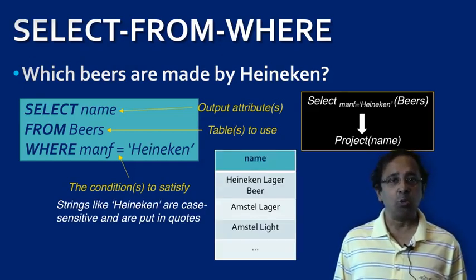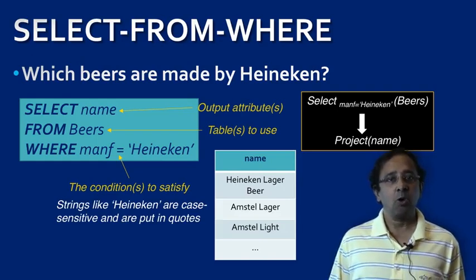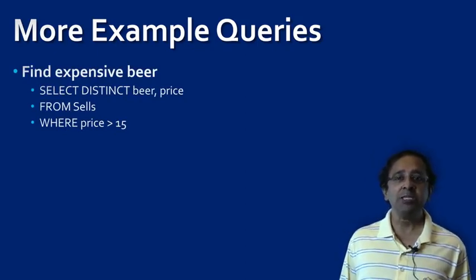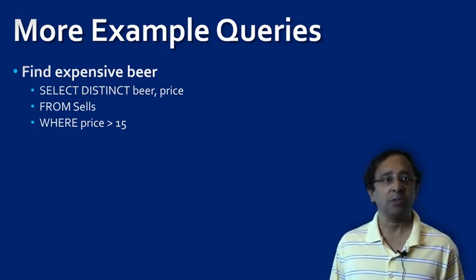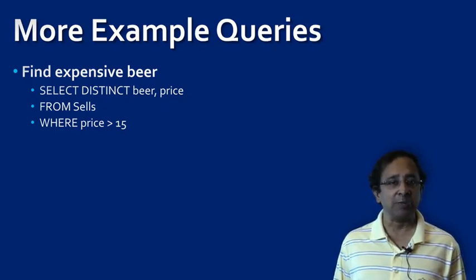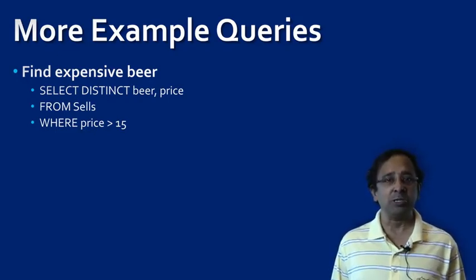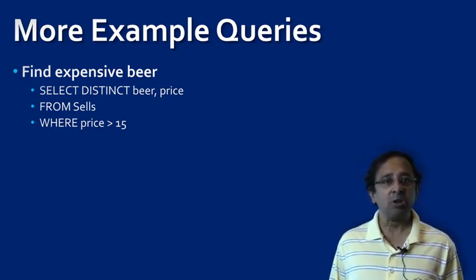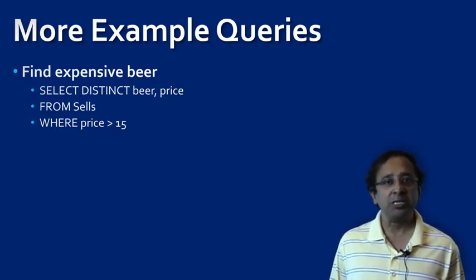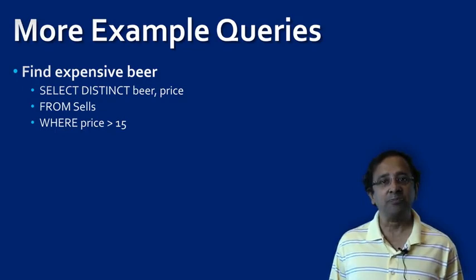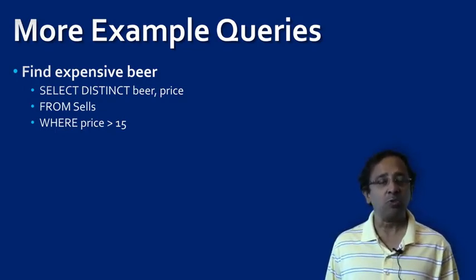We illustrate some more features of SQL using two example queries. The first looks for expensive beer and its price. Let's say we consider a beer to be expensive if it costs more than $15 per bottle. From the schema, we know that the price information is available in the table called SELLS, so the FROM clause should use SELLS. The WHERE clause specifies the price of the beer to be greater than $15. Notice that the SELLS table also has a column called BAR — if two different bars sell the same beer at the same price, we'll get both entries in the result. But that's not what we want. Regardless of the multiplicity of bars that have the same price for the same beer, we want the result just once. This is achieved through SELECT DISTINCT, which ensures that the result relation will have no duplicates.